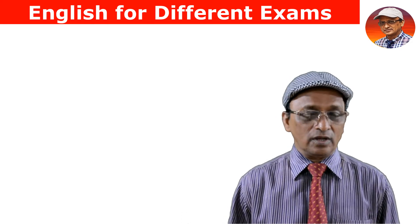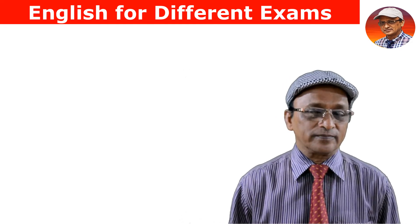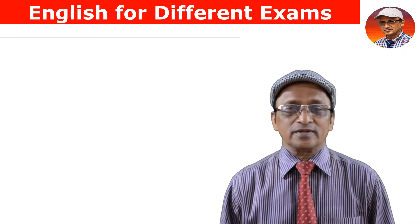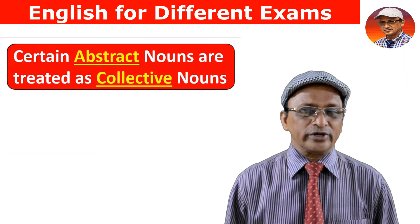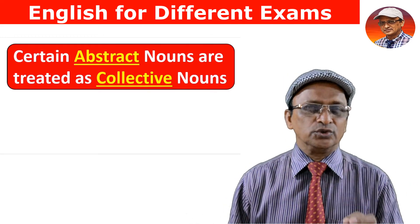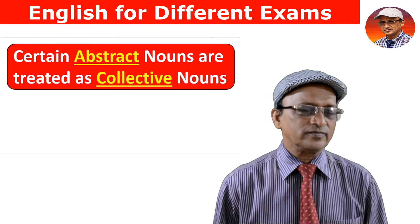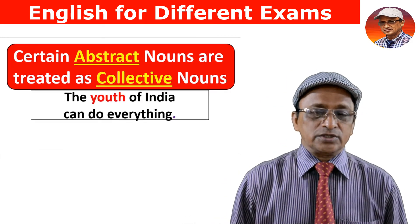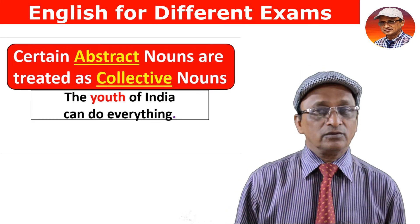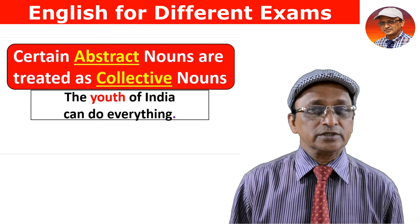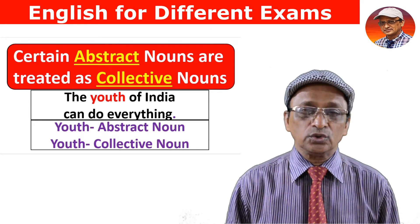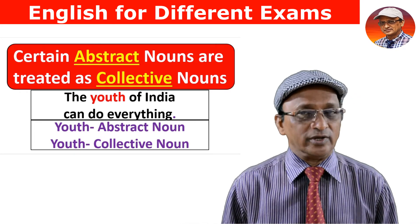Now let me come to different special aspects of nouns. Certain abstract nouns are also treated as collective nouns. For example, 'youth' is an abstract noun, but when I say 'the youth of India can do everything,' youth can be treated as a collective noun — referring to all young people taken together.